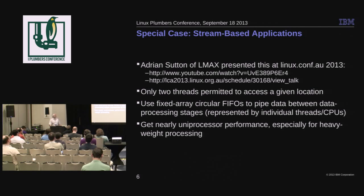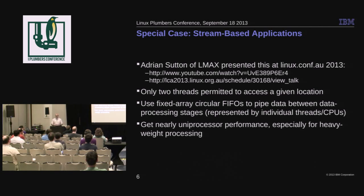There's a company called LMAX — at LinuxConf AU, a guy named Adrian Sutton presented on it, there are a couple of URLs. The constraint he has is that only two threads can ever access the same location at the same time. That means memory contention is limited, since you don't have a thousand threads hammering the same location. He uses fixed-array circular FIFOs to pipe data between data processing stages, where each stage is represented by a thread. He gets very nearly uniprocessor performance, especially when processing is heavyweight — the only loss is the cache miss when feeding in and out of the FIFOs moving between processors.